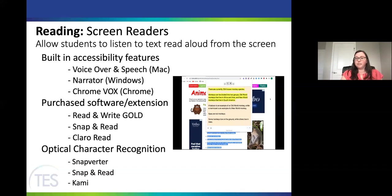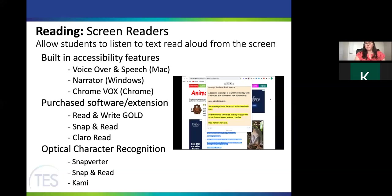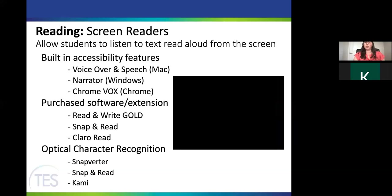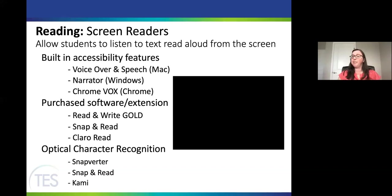Here's an example of ClaroRead reading a website: 'There are 64 known monkey species. Monkeys can be divided into two groups: old world monkeys that live in Africa and Asia, and new world monkeys that live in South America. A baboon is an example of an old world monkey, while a marmoset is an example of a new world monkey. Apes are not monkeys.' It's pretty accurate but you may get issues with words like 'live' and 'live.' It is a little robotic, though for many students it's better than nothing. More robust programs like Read and Write or Snap and Read let you change speed and voices.